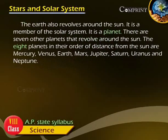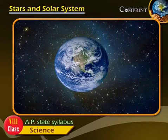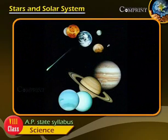The Earth also revolves around the Sun. It is a member of the Solar System. It is a planet. There are seven other planets that revolve around the Sun.